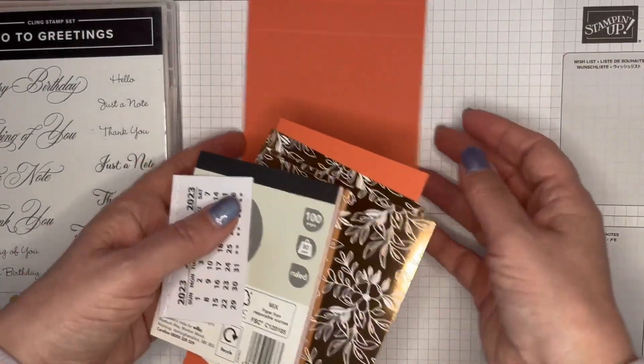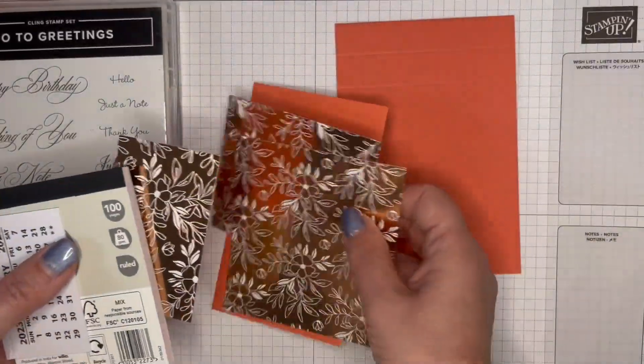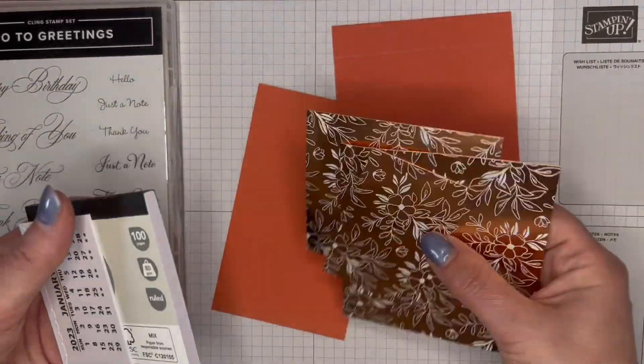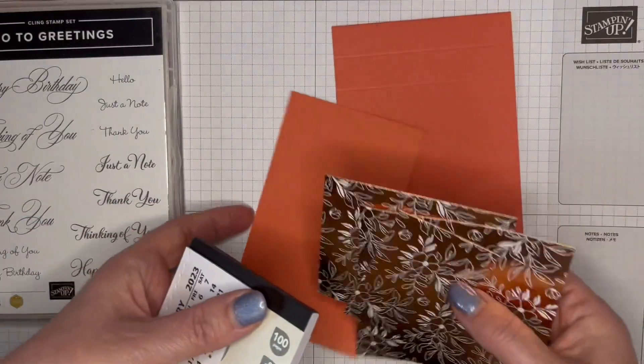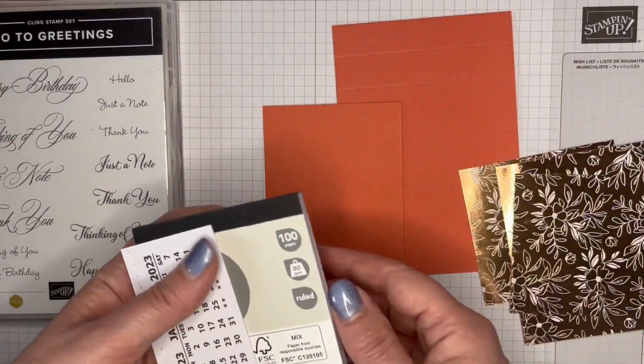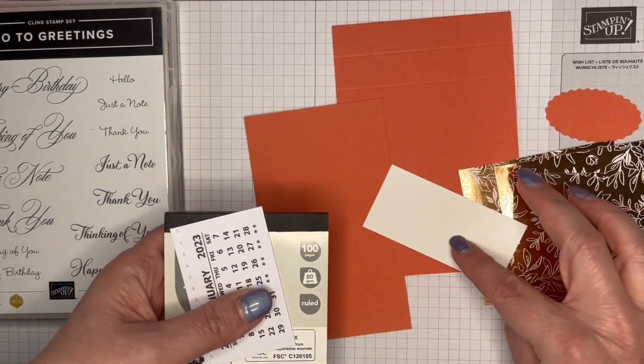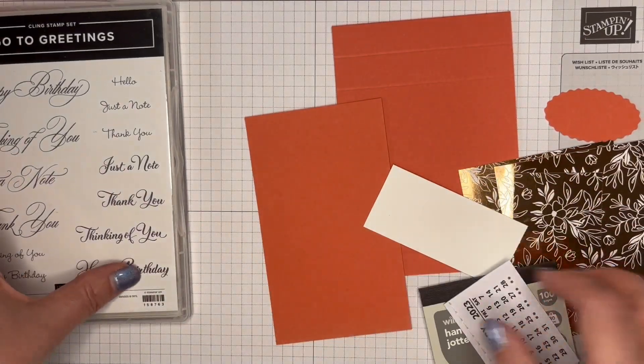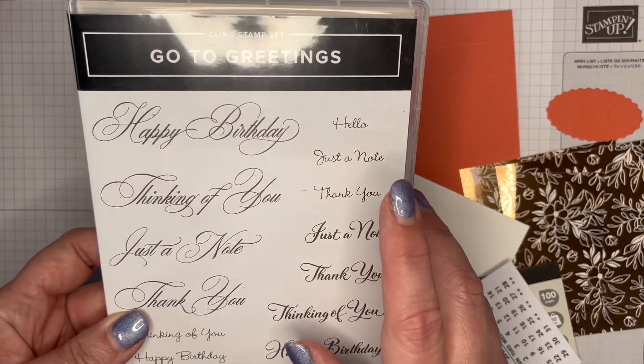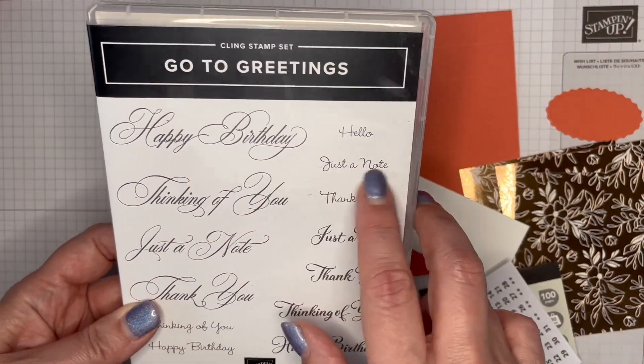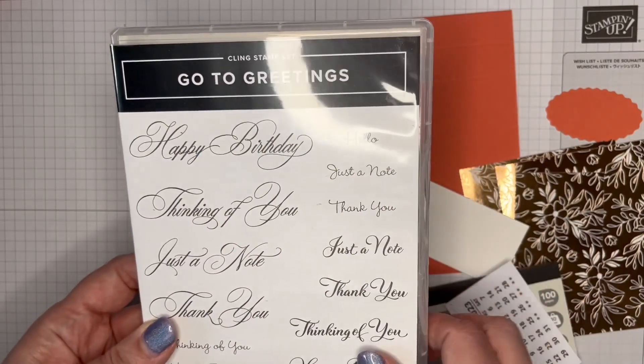So we're using this Splendid Day Designer Series paper. It's absolutely gorgeous. And Calypso Coral card. And I've got a little bit to do the sentiment on the front, which is this one, just a note from Go To Greetings.